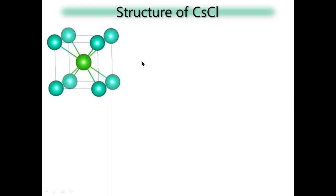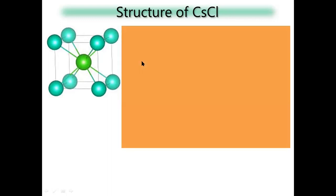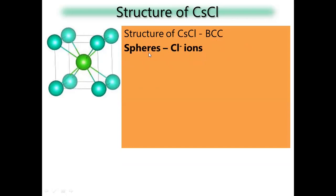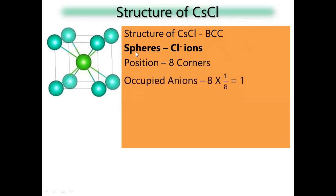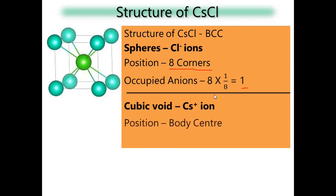In cesium chloride, chlorine shows a position of spheres at 8 corners only — not 6 faces — because this is a BCC structure. Occupied atoms equals 1. A unit cell of cesium chloride occupies only 1 Cl⁻ ion, but is formed by 8 Cl⁻ ions. Formed by 8 Cl⁻ ions, occupied only 1 Cl⁻ ion.